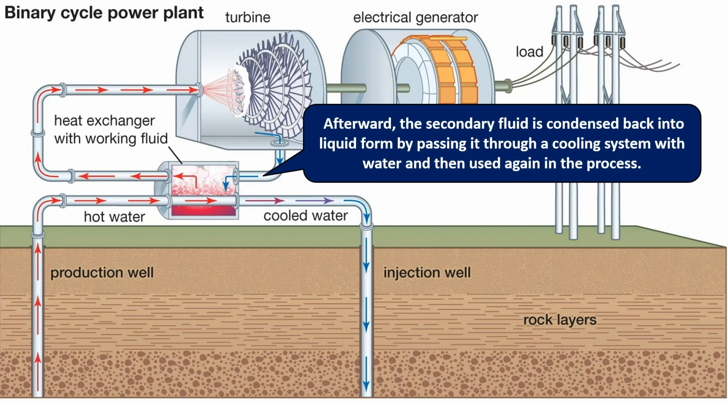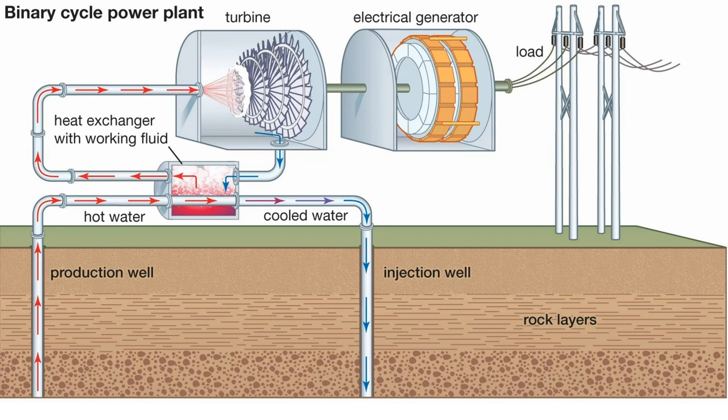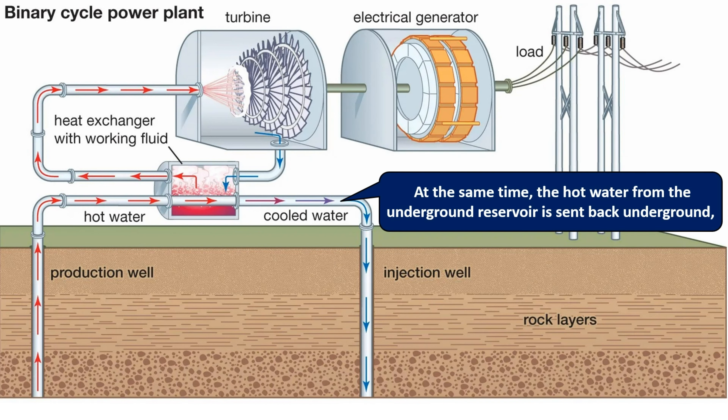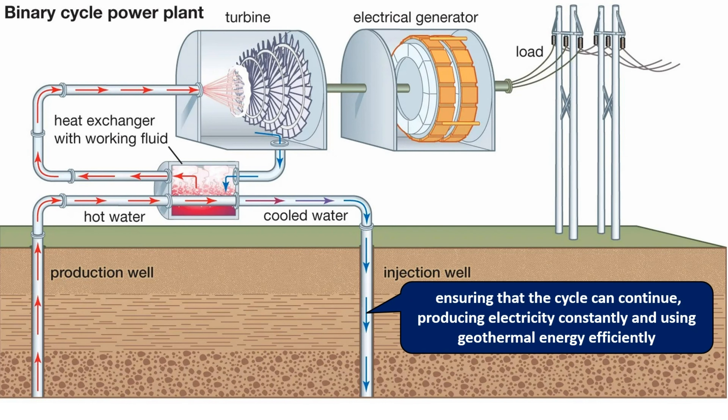Afterwards, the secondary fluid is condensed back into liquid form by passing it through a cooling system with water, and then used again in the process. At the same time, the hot water from the underground reservoir is sent back underground, ensuring that the cycle can continue producing electricity constantly and using geothermal energy efficiently.